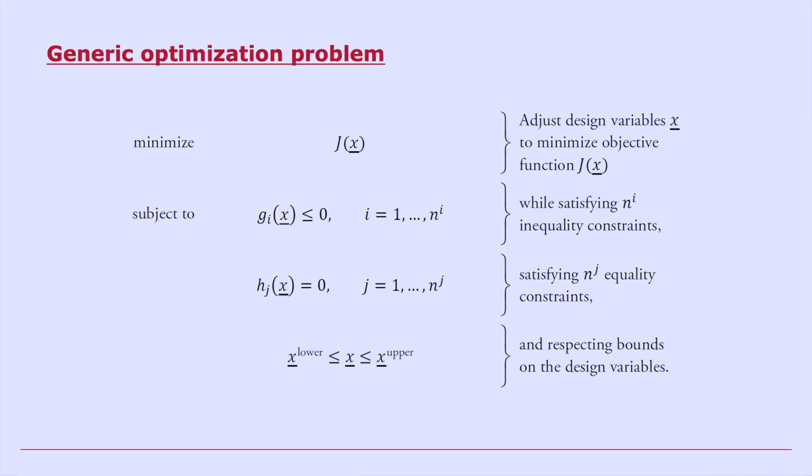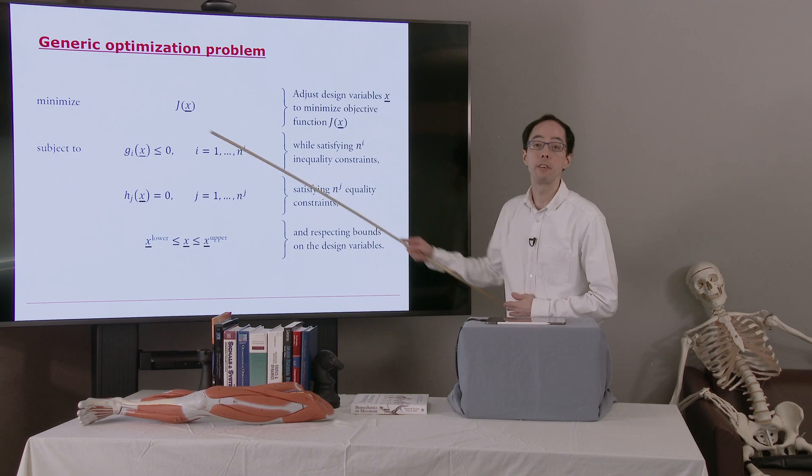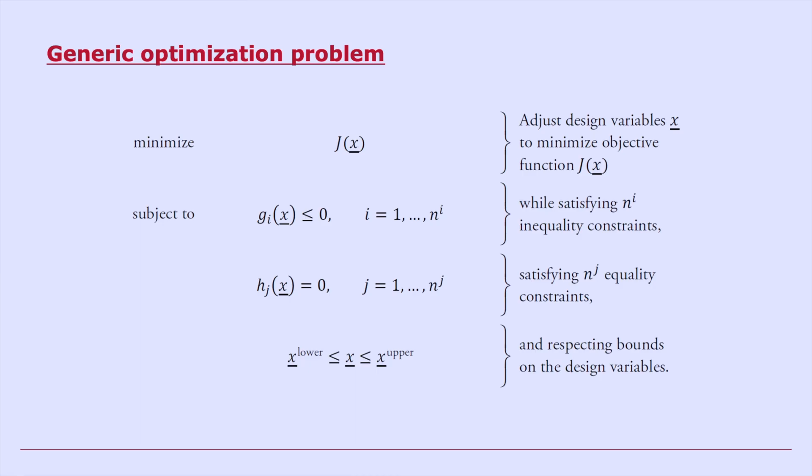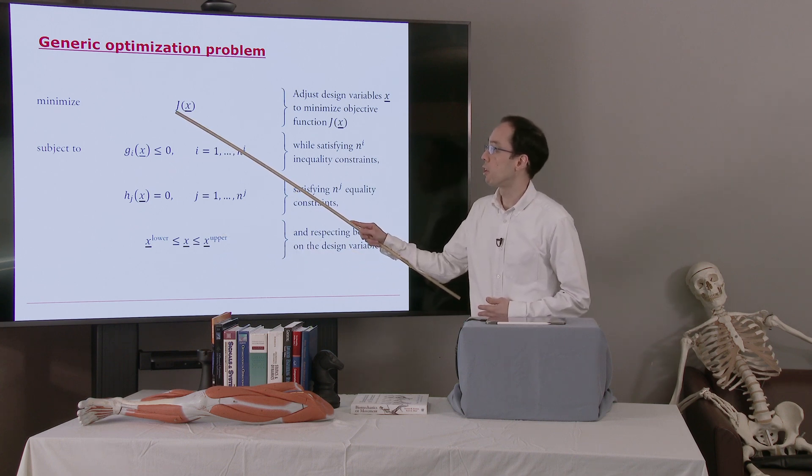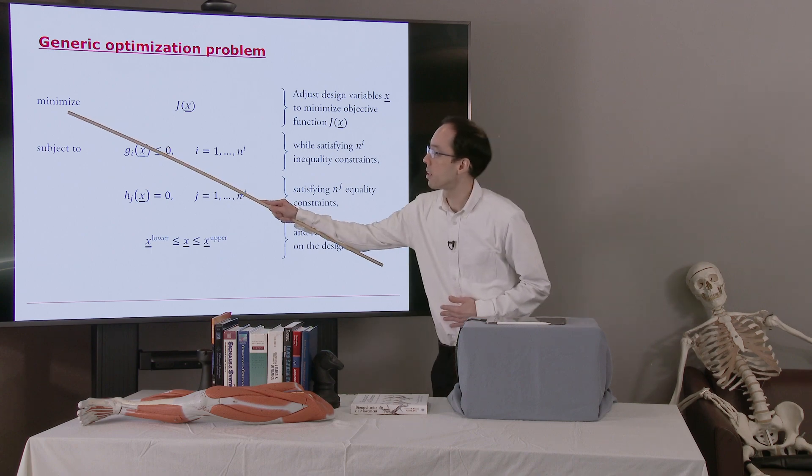So here's a generic optimization problem. Let's take a look at this. You can write every optimization problem more or less in this form. First of all, we have what's called the objective function or the cost function. It's some function of x. These are called the design variables. These are the variables for which we want values. We don't know what the value should be. We're asking the optimizer, find us values for these variables such that we're getting as low a number here as possible from this function. So we're minimizing some function.